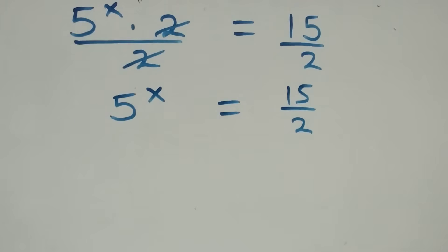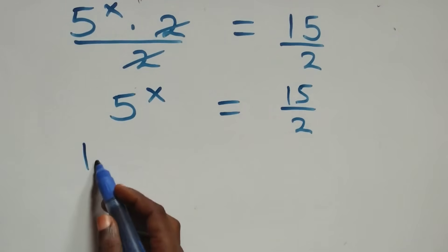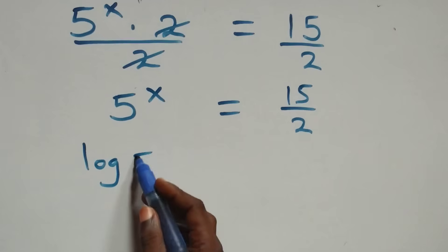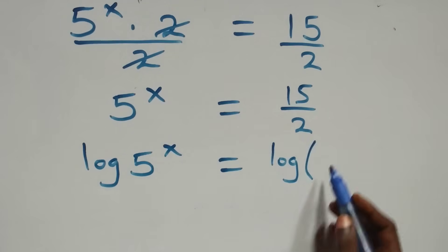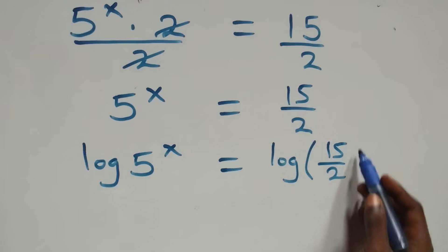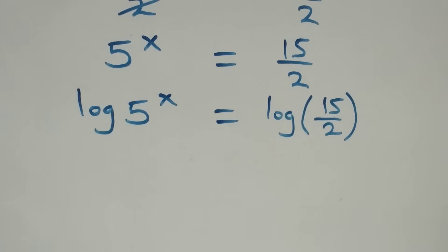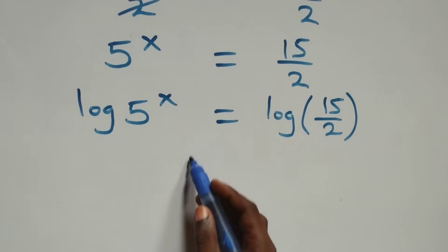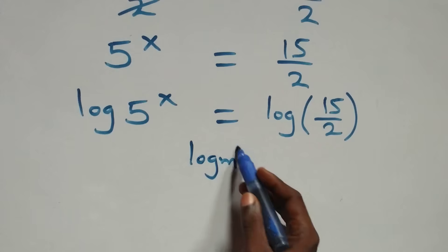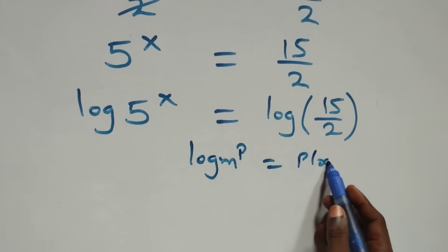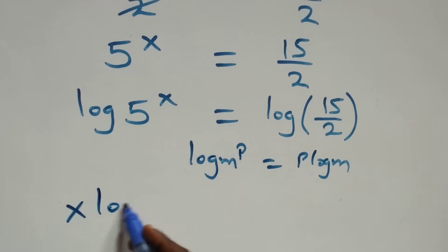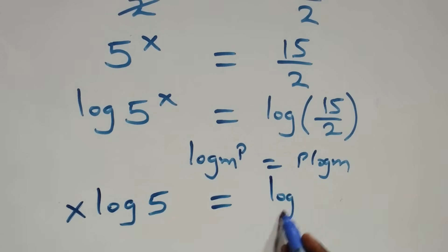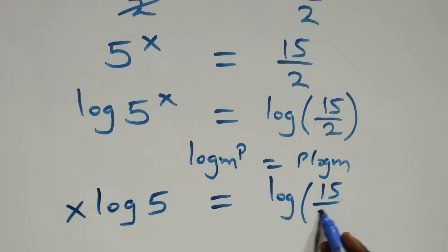The next step: we take the log on both sides. That is, we have log of 5 raised to power x equals to log of 15 over 2. We apply the power rule of logarithms: when we have log m raised to power p, this is the same thing as p log m. So this becomes x log 5 equals to log 15 over 2.